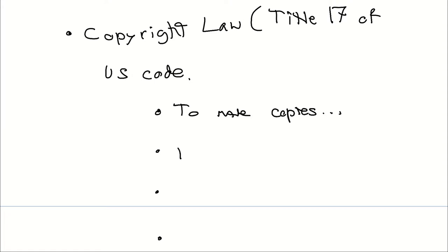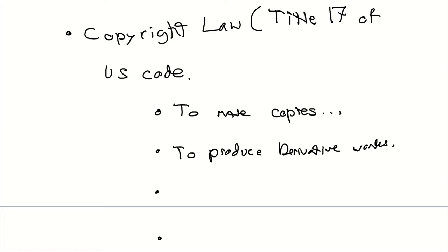It also allows you to produce derivative works. A derivative work means you take an idea and extend upon it. For example, a book or movie — if you decide to translate a book to a different language or dub a movie in a different language, you have exclusive rights to do that. Other people can't just take your movie, translate it into a different language, and claim it as theirs.